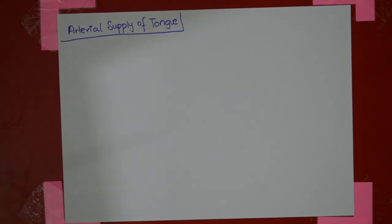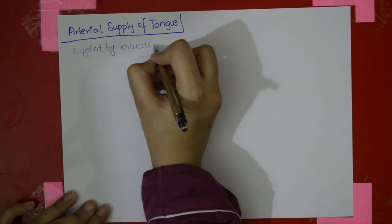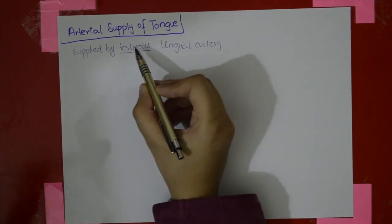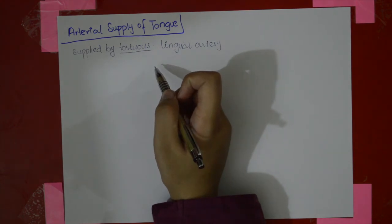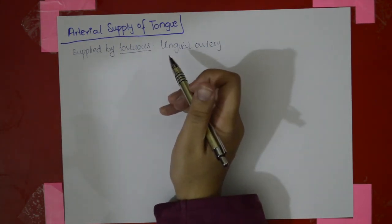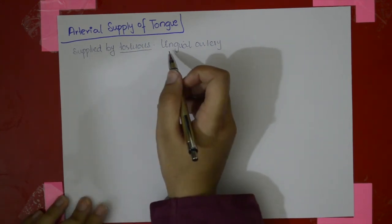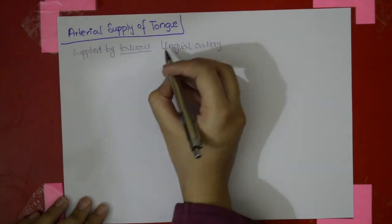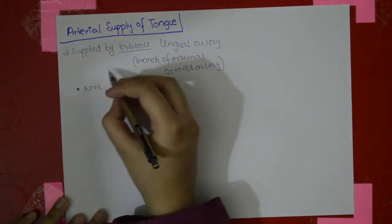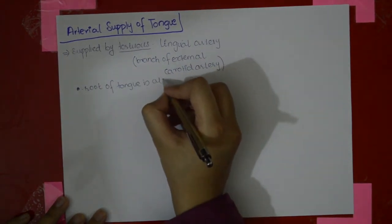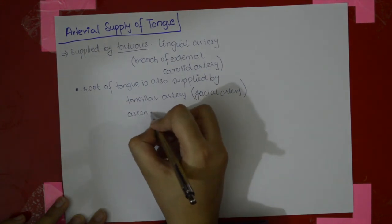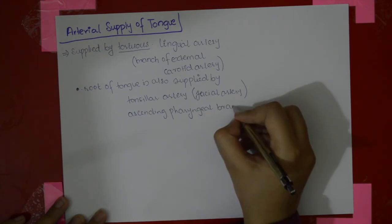Now the arterial supply of the tongue: the tongue is supplied by the tortuous lingual artery. It is called a tortuous artery because it moves up and down with movements of the pharynx. The lingual artery is a branch of the external carotid artery — this is the more important point. The root of the tongue is also supplied by the tonsillar artery, which is a branch of the facial artery, and by the ascending pharyngeal branch of the external carotid artery.